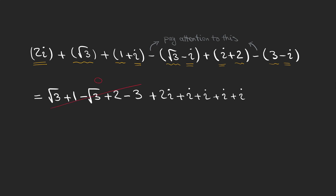Pay attention that the real part is zero and in the imaginary part we don't have any negative signs — that's because of the minus-minus signs before the parentheses. Minus minus i equals i, and we can see that we have six i's, which gives six i. So the result is a purely imaginary number.